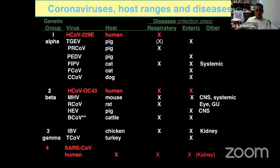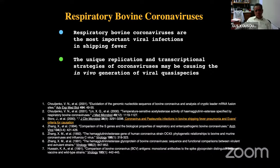In our lab we worked on bovine coronaviruses and described the quasi-species concept in several papers in the late 1990s and early 2000s. We discussed how the unique replication and transcriptional strategies of coronaviruses generate viral quasi-species in vivo — variants that exist and can be selected under different pressures. Bovine coronavirus distinct genotypes affect mostly respiratory or mostly enteric systems, mirroring exactly what we see now with SARS-CoV-2.